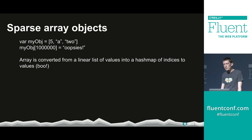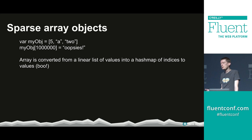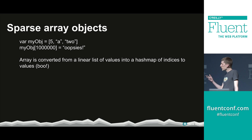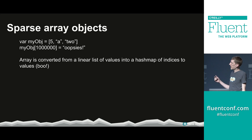Using a hash map for sparse arrays means reduced performance: instead of a simple array lookup — find the array in memory, add the index, and pluck out the value — you now have to go through a hash function, an array lookup, and a linked list traversal to find the right value.